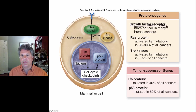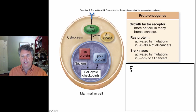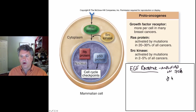There can be growth factor receptor mutations which cause more growth factor receptor proteins to be present on the cell surface than in normal cells, and that is true for many cases of breast cancer. For example, the epidermal growth factor receptor gene becomes amplified in 70% of all human breast cancers — a very significant result.